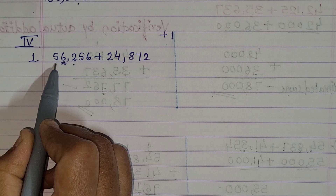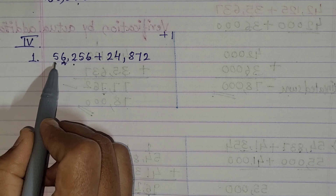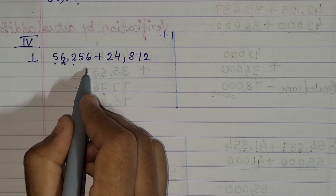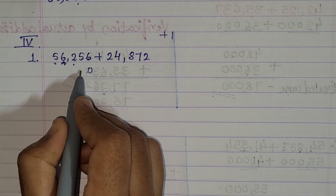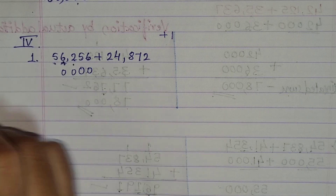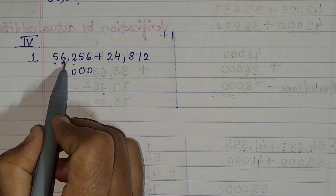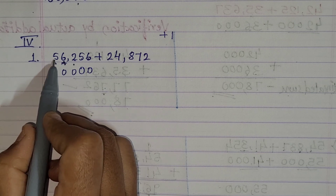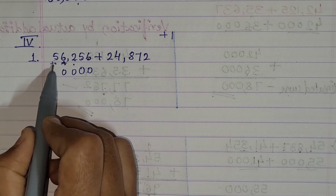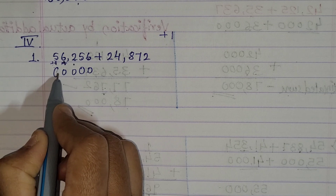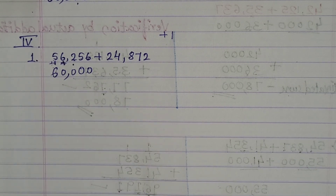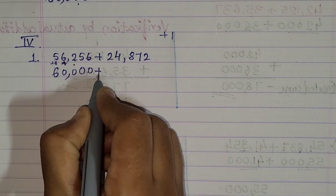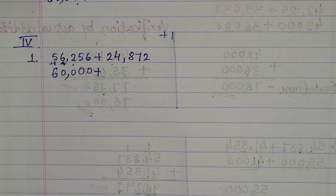Let's do it. Unit, ten, hundred, thousand — if you see the thousand place here, it is 6, which means you have to add one to the digit at the ten thousand place. So 5 plus 1 becomes 6. Let's put the comma — the answer is sixty thousand.